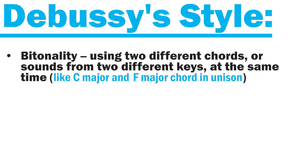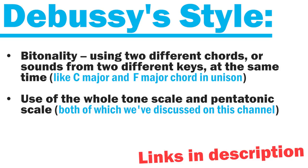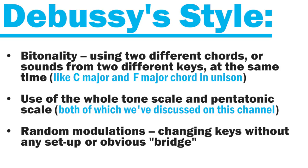Debussy's style was really groundbreaking for the time around 1900 and featured innovations like bitonality, which is using two different chords or sounds from two different keys at the same time — so that'd be like doing a C major chord and an F major chord in unison, for a simple example. He used the whole tone scale and the pentatonic scale a whole bunch, and he also was pretty known for randomly modulating, which basically just means changing keys without any obvious setup or bridge the way people in the early romantic and classical eras would have done.